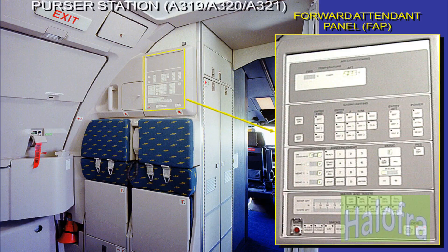The Forward Attendant Panel, FAP, is located at the purser station. The FAP is divided into four parts: the air conditioning panel (optional), the light panel, the audio panel, and the water and miscellaneous panel.